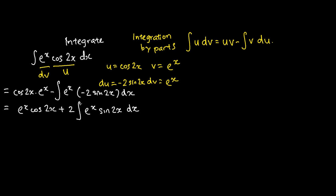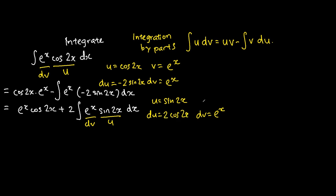This integration portion requires another round of integration by parts. This time we will make u as sine 2x and dv as e to the power of x. So my u is equals to sine 2x, my dv is e to the power of x, du is the differentiation of u which is 2 cosine 2x, and v is the integration of dv which is e to the power of x.